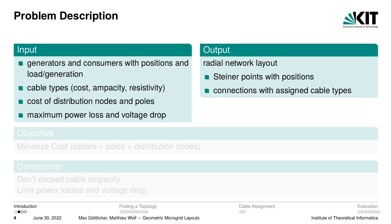For the microgrid cabling problem we are given a set of terminals with load and generation data and positions, and also a set of cable types which have a cost per unit, a capacity and a resistivity. We also have additional cost factors such as distribution nodes and poles where we might need to install additional equipment. We are also given the maximum power loss and voltage drop which are acceptable in the network.